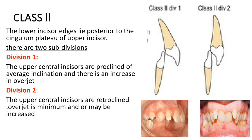In Class 2 Division 1, the upper central incisors are proclined with average inclination and there is an increased overjet. In Class 2 Division 2, the upper central incisors are retroclined and the overjet is minimal or may be increased. As seen in the clinical images, both divisions share a Class 2 incisor relationship, but in Division 1 the incisors are proclined with increased overjet, while in Division 2 the upper central incisors are retroclined.